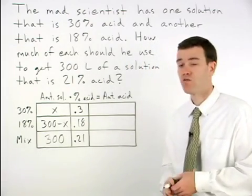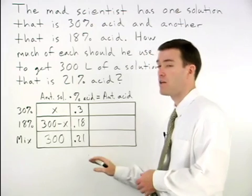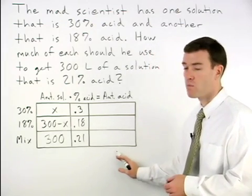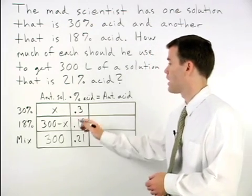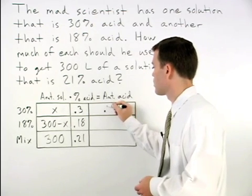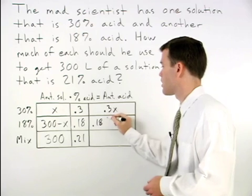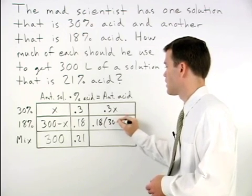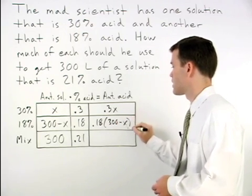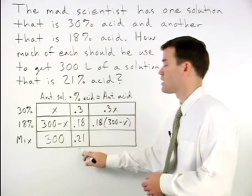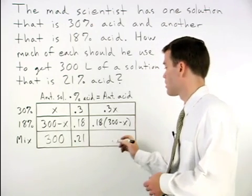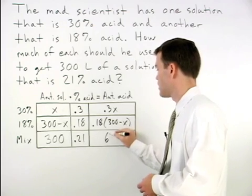Based on our formula, we now multiply the first two columns together to fill out the third column of the chart and we have .3x, .18 times parentheses 300 minus x, and 300 times .21 which is 63.